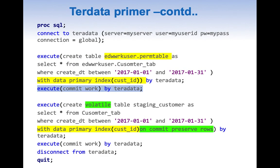Now let us look at this in the code. Here I am running the explicit pass-through where we are connecting to Teradata and creating two tables. The first table is a permanent table with WITH DATA PRIMARY INDEX (column_name). We are also creating a volatile table with WITH DATA PRIMARY INDEX (column_name) ON COMMIT PRESERVE ROWS. Then we disconnect from Teradata. The key points are: use CREATE VOLATILE TABLE and add WITH DATA PRIMARY INDEX (column_name).